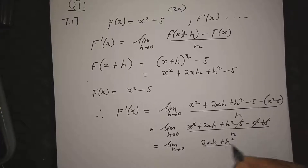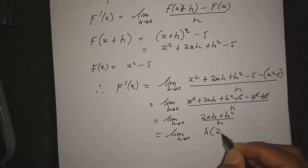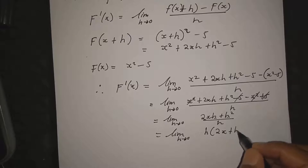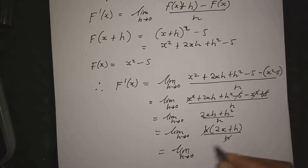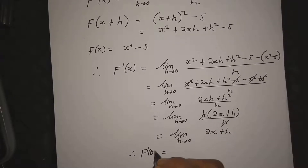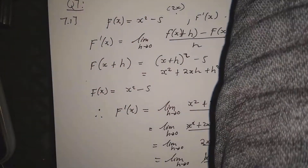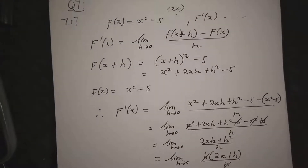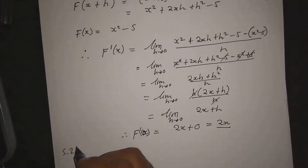Dividing each term by h: lim h→0 of (2x + h). Now substitute h = 0, so f'(x) = 2x + 0 = 2x. That is our final answer for 7.1 using first principles.